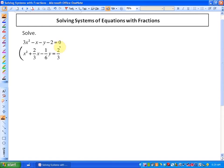If I multiply this entire equation by 6, what you're going to see is that all of the denominators will disappear. More specifically, it's the same as multiplying each individual term by 6. So if I rewrite this function as x² + (2/3)x - (1/6)y = 2/3.